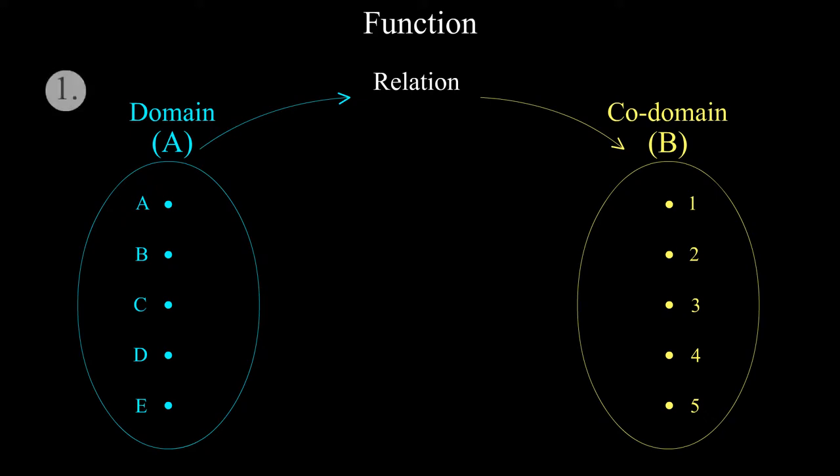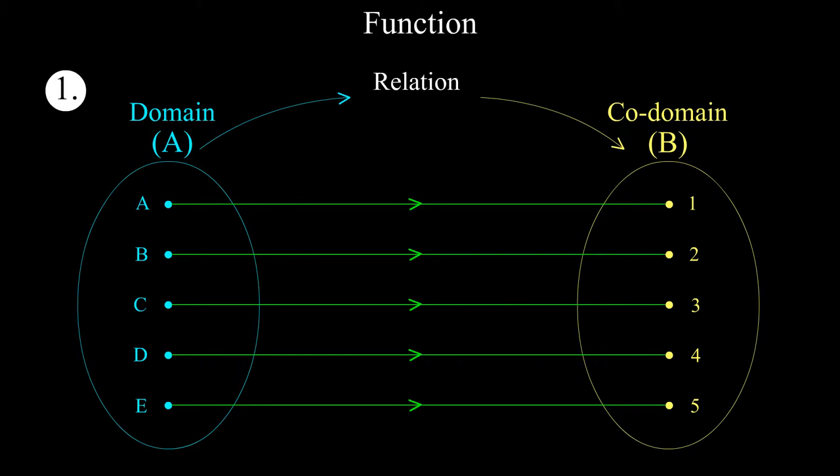Look at the first case. Here each element of domain is mapped uniquely with elements of codomain. So this relation is a function.